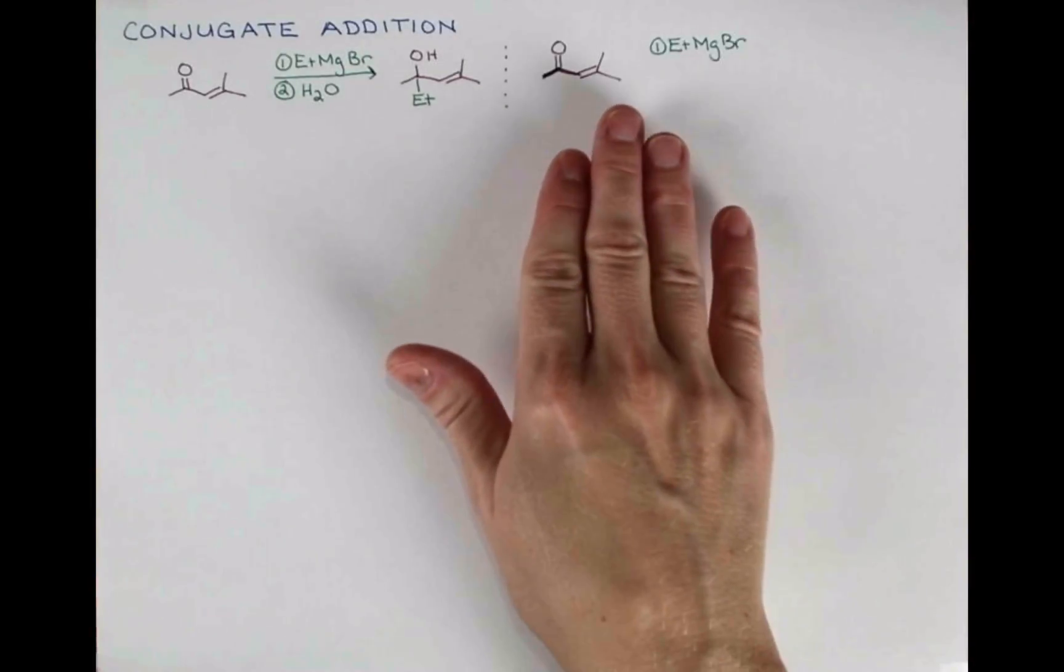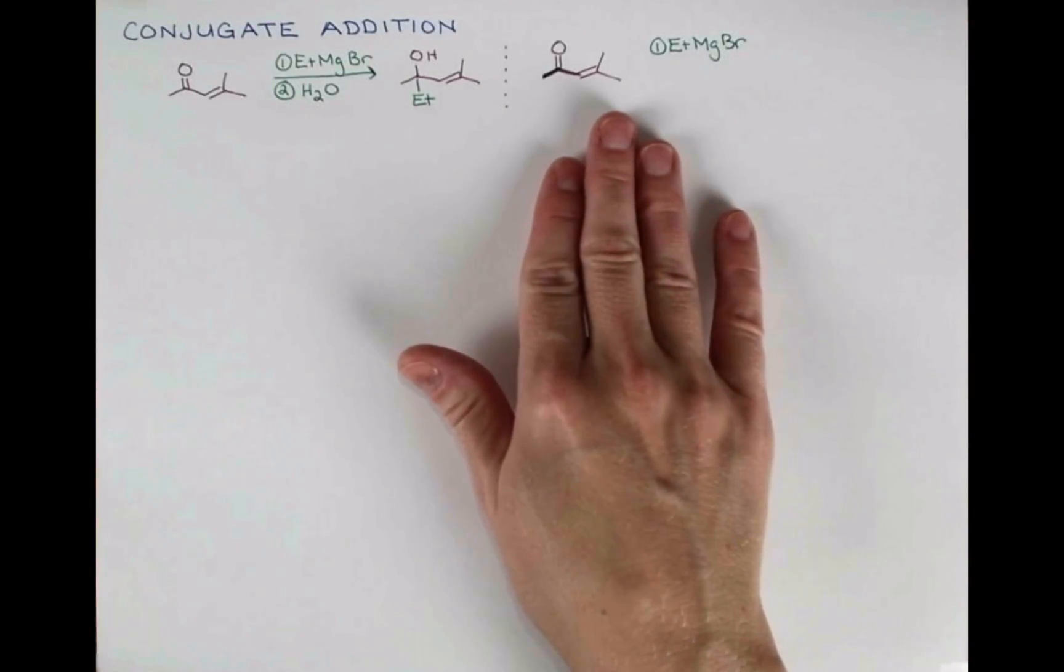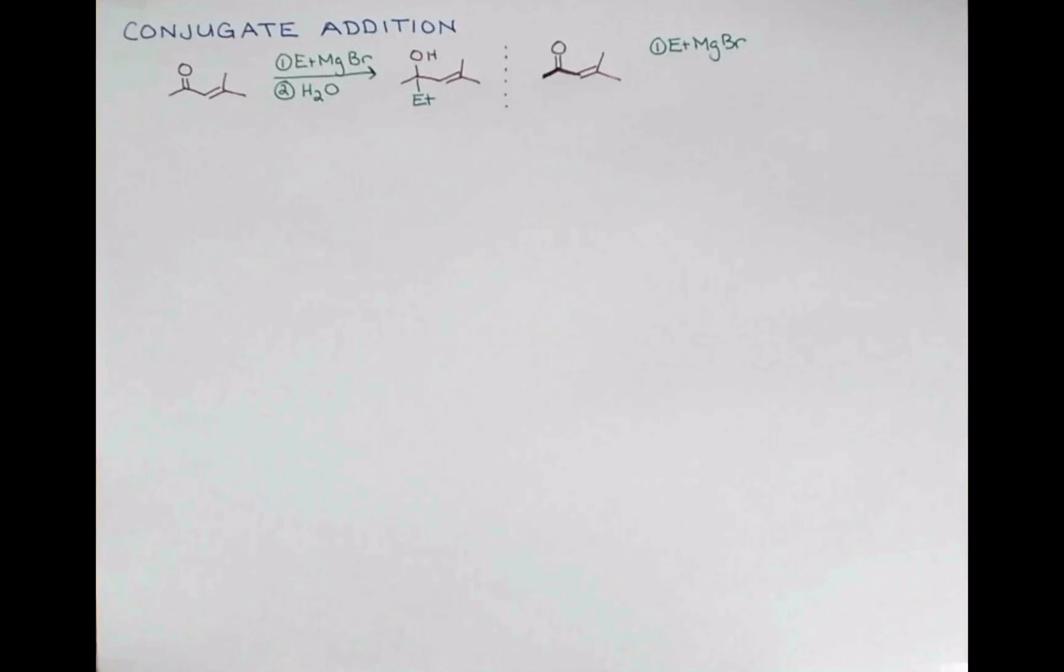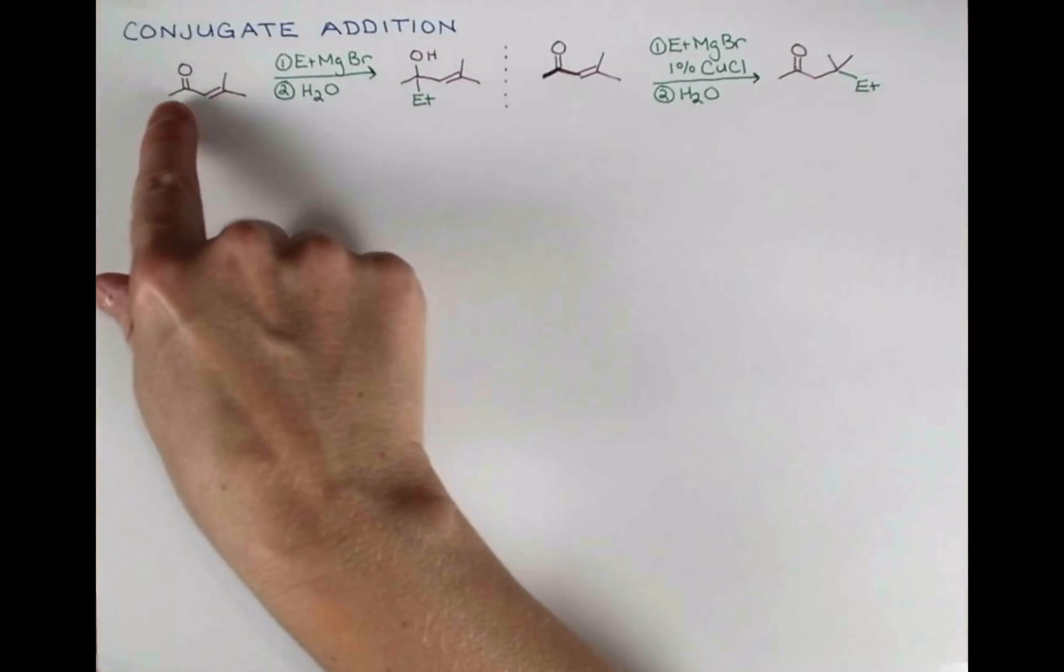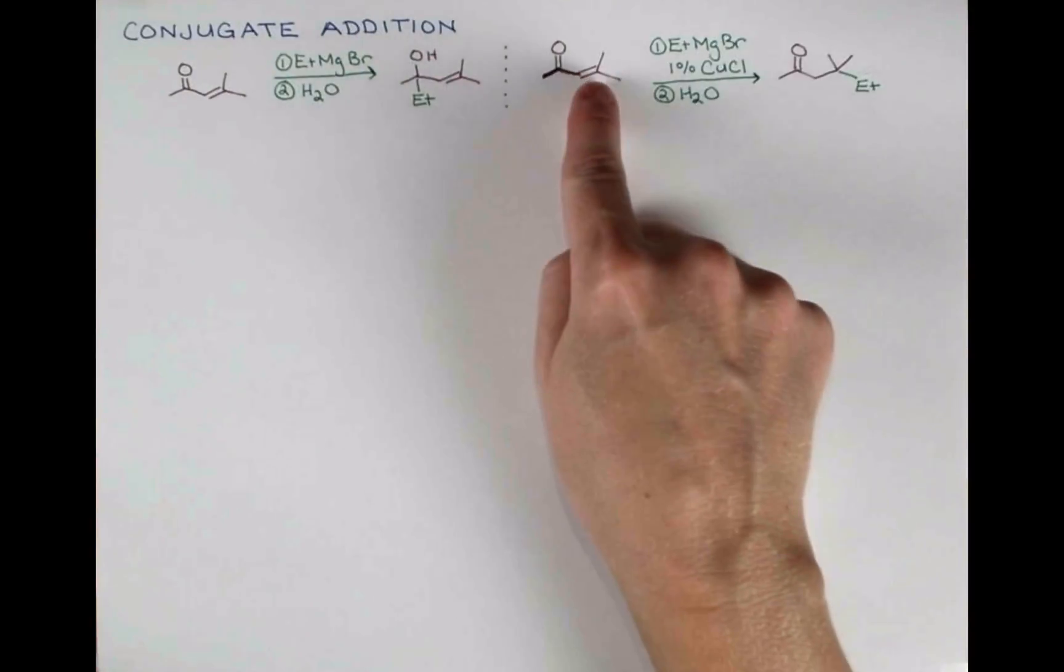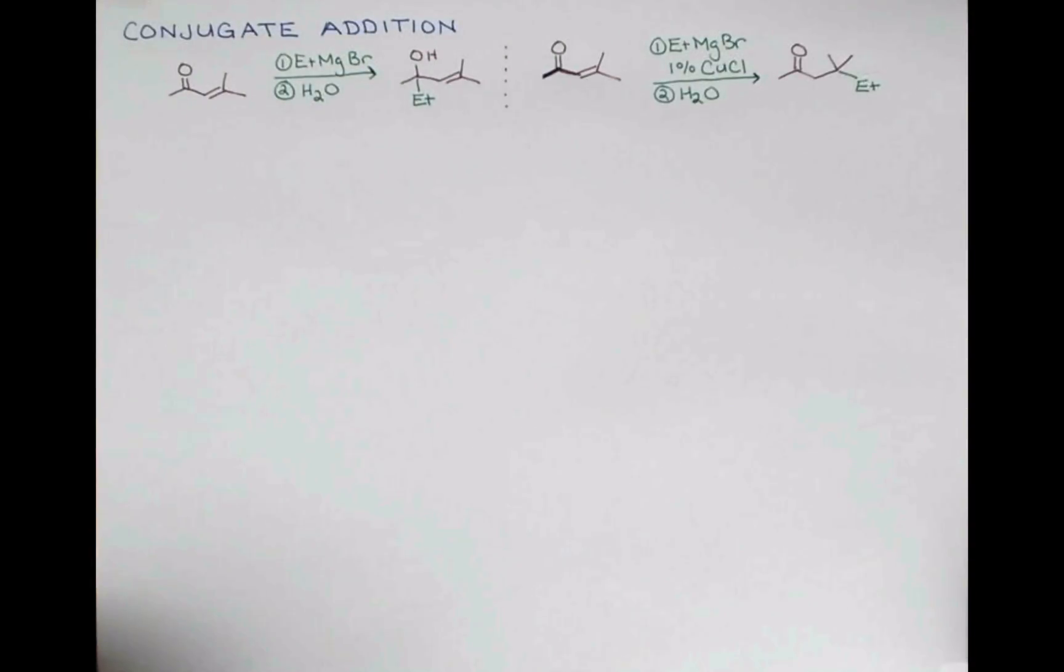Now if we perform this same reaction but add in a catalytic amount of copper chloride, we get a completely different product. The ethyl group, instead of reacting at the carbonyl carbon, has reacted at the end of the conjugated system.